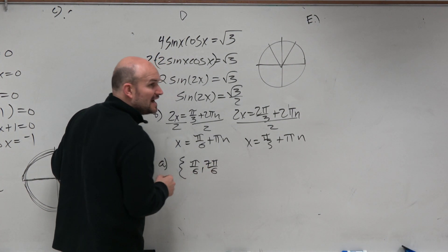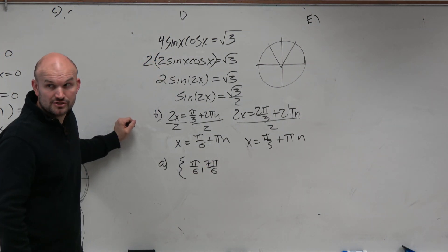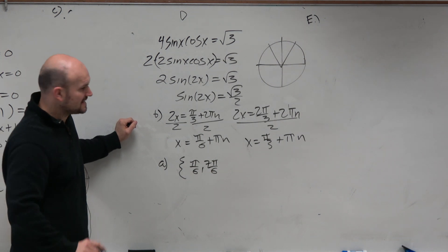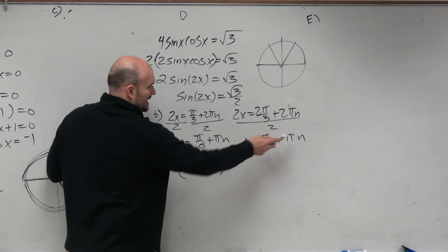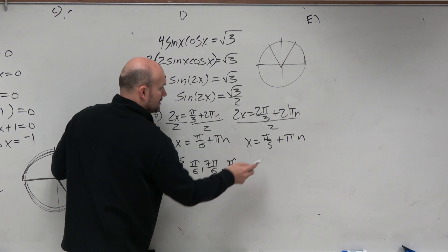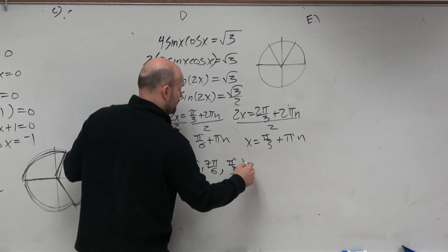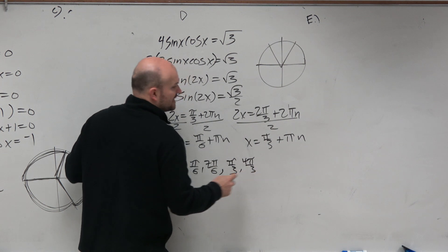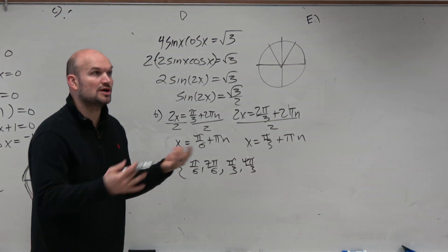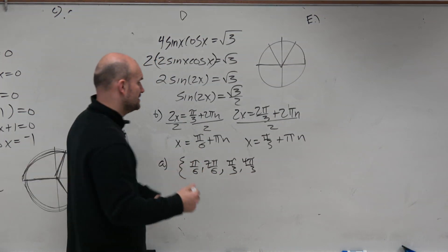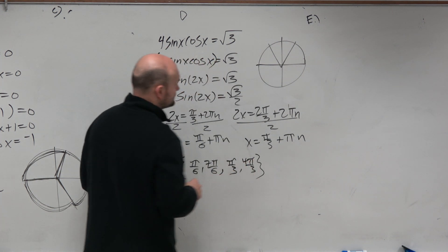Now if I add another π, that's 13π over 6. Is that larger than 2π? Yes, so I've got to stop. But then I do the next one. n is 0, π over 3. When n is 1, that's 3π over 3. 3π over 3 plus π over 3 is 4π over 3. And if I did that again, I would get 7π over 3, but that's larger than 2π because 2π is 6π over 3. So that is my final answer.